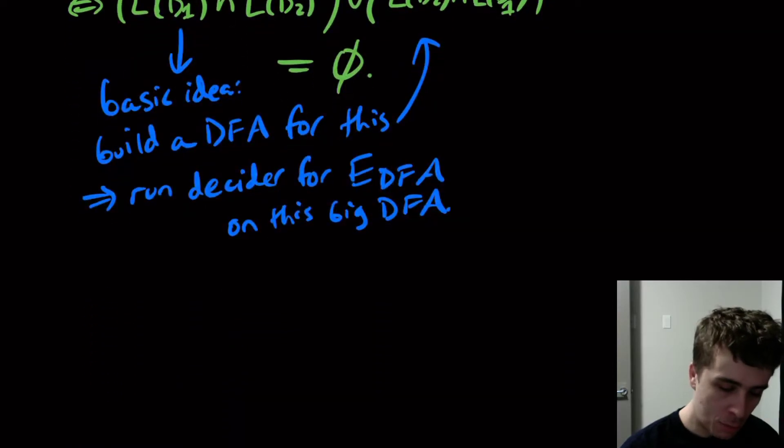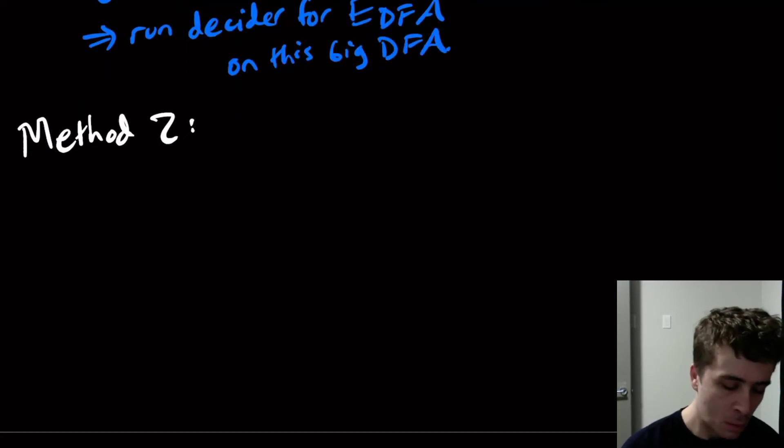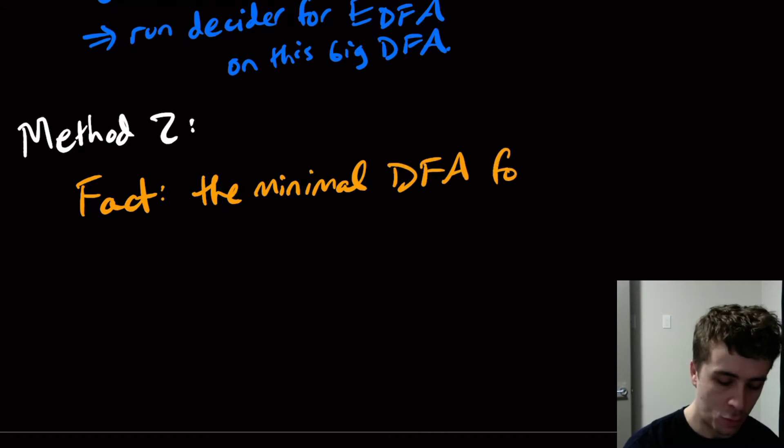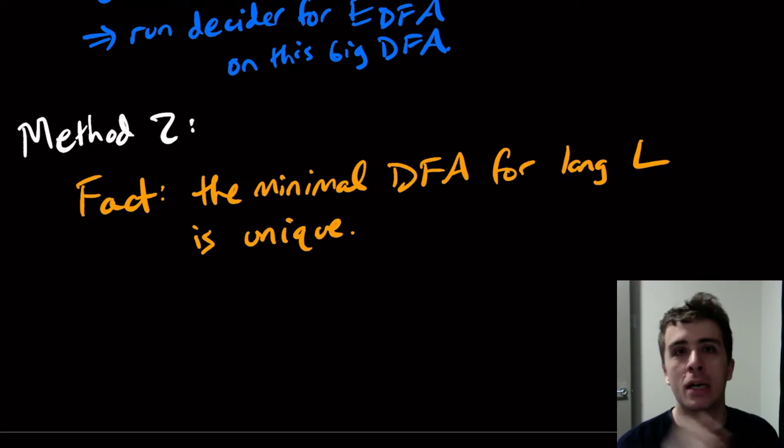So what's another way that we can prove this? This is method two. One way that you can do this is, one fact that you can show about DFAs is that the minimal DFA for language L is unique. So that means if I minimize a DFA and I minimize a different DFA for the same language, then I'm going to get these identically same DFA. So the same transitions, same states, maybe different names of the states, but the structure is inherently the same.